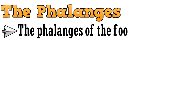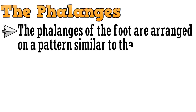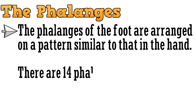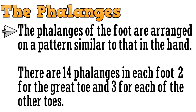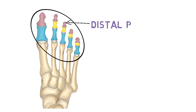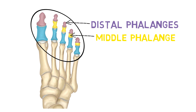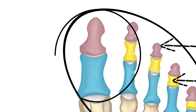The last part of the bones of the foot are the phalanges. The phalanges of the foot are arranged on a pattern similar to that in the hand. There are 14 phalanges in each foot — two for the great toe and three for the other toes. The bones shaded in purple are the distal phalanges, yellow are the middle phalanges, and blue are the proximal phalanges. The great toe is known as hallux in Latin.